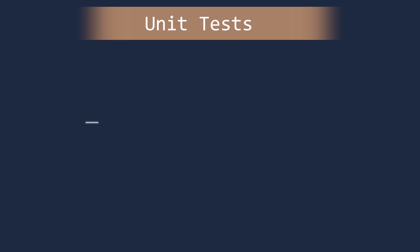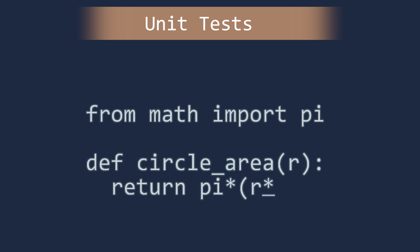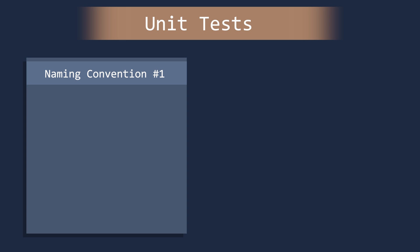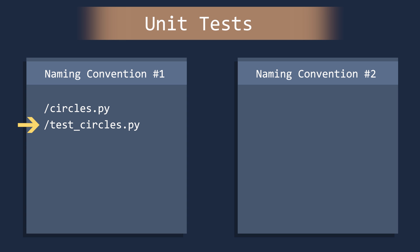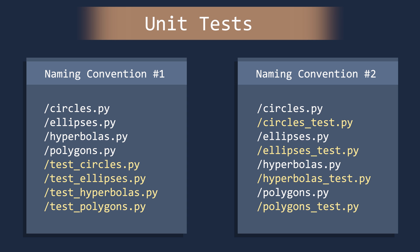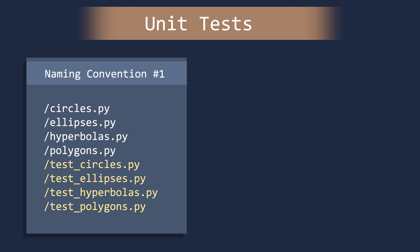Rather than simply criticizing the engineer's work, we will now write unit tests to check that the function works properly. The engineer will then be able to test their code before submitting it for review. The function is in a file called circles.py. You typically put the unit tests in a separate file. There are two common conventions for naming the test module: the first is test_circles.py, and the second is circles_test.py. In the first case, all test modules will be grouped together; in the second, each module appears next to its test class in your file system.